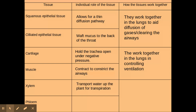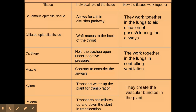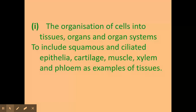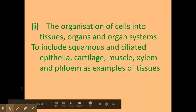The xylem transports water up the plant for transpiration, and the phloem transports assimilates up and down the plant in translocation. These create the vascular bundles in plants, and you'll learn more about these when you move on to transport in plants. So that's specification point i on the OCR A-level biology specification, covering some specific examples. Good luck with your exams and all the best!